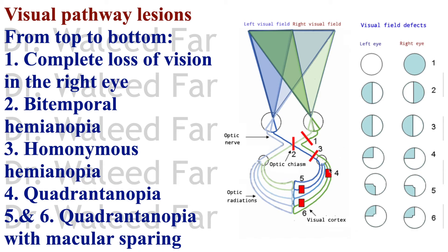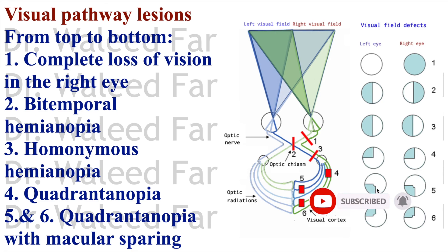A lesion after the lateral geniculate nucleus in the optic radiation results in quadrantanopia, due to further processing of fibers. Lower fibers come from the lower retina (upper quadrantanopia); upper fibers come from the upper retina. Further lesions toward the primary visual cortex — lesions 5 and 6 — also produce quadrantanopia, but with macular sparing.